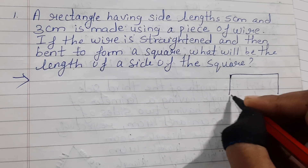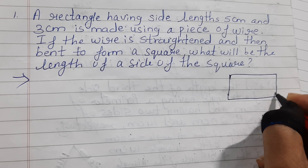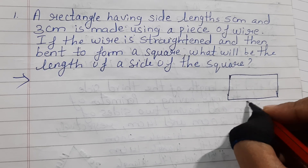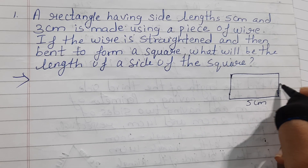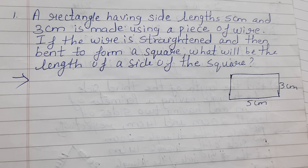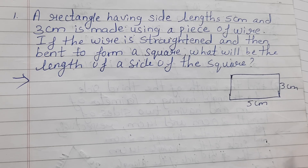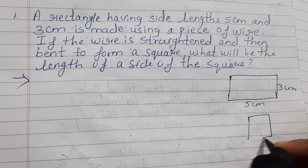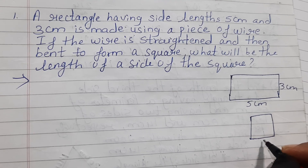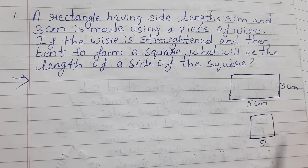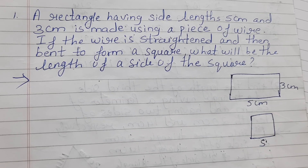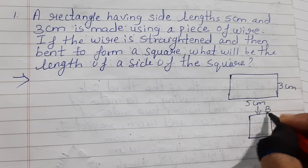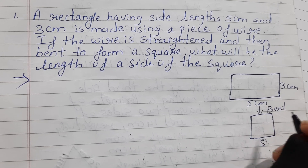Basically it says that a rectangle having a side of length 5 cm and 3 cm. Using a piece of wire, if the wire is straightened and then bent, it forms a square. So what you will have to find is the length of the side of the square after bending.